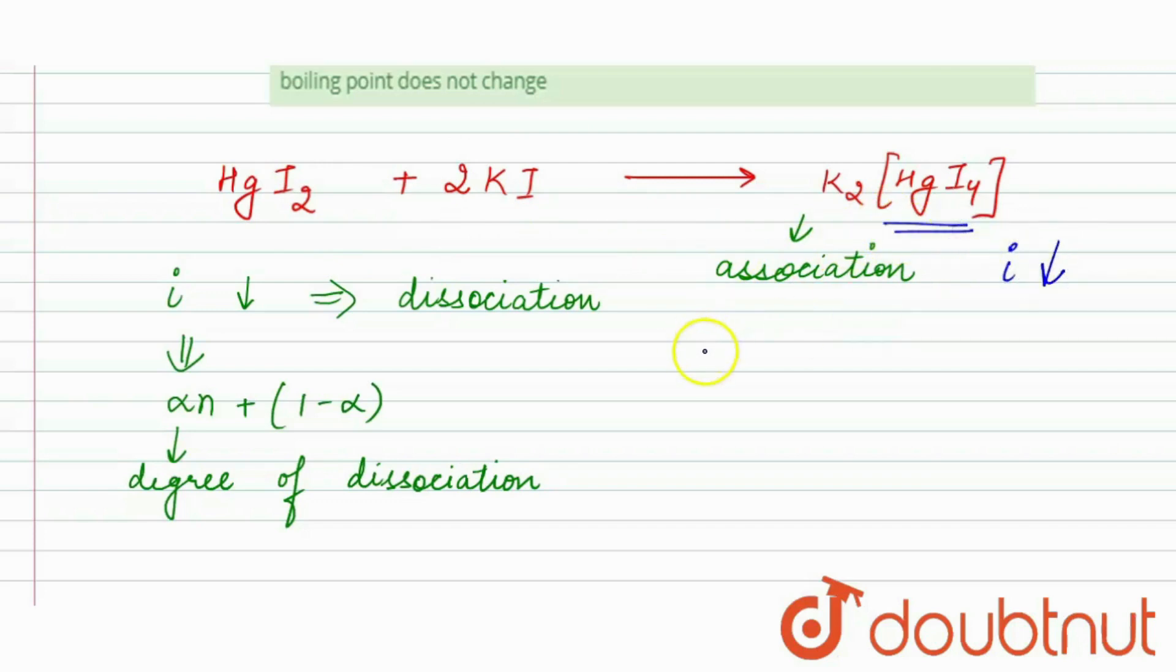So, if the i decreases, then we know that delta Tf is equal to Kf into i into molality. If i decreases, then the depression in freezing point will also decrease. It will also be less.